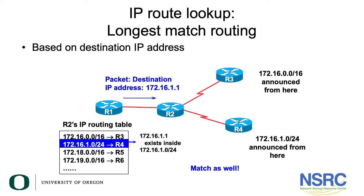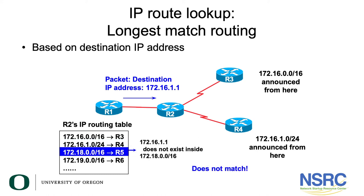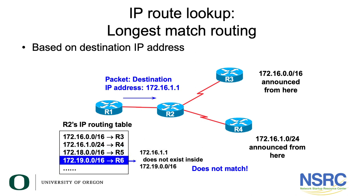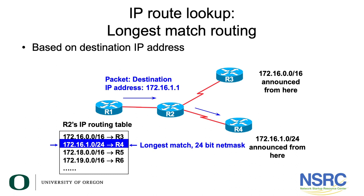The second prefix 172.16.1.0/24, with a next hop of router R4, is also a match since 172.16.1.1 exists within its range. The next prefix 172.18.0.0/16, pointing to router R5, and the fourth one, 172.19.0.0/16 with a next hop of router R6, do not match. So remember, the rule is the longest match wins — the prefix 172.16.1.0/24 is the one that is selected.